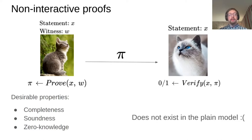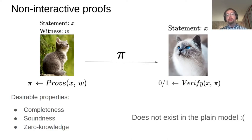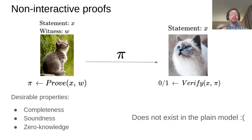Completeness says that if the prover cat is behaving honestly — so it creates a valid proof from the statement and the witness — then this should be accepted by the verifier cat. Soundness states that if the prover cat is being dishonest, trying to prove something that's not true, then it should not be accepted. Zero knowledge says that the proof reveals nothing more than the fact that the statement is true, and importantly does not reveal anything about the witness used.